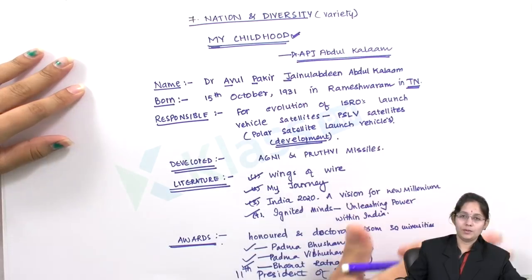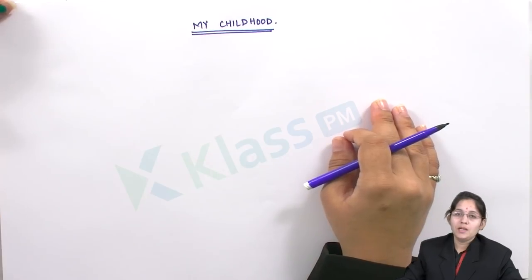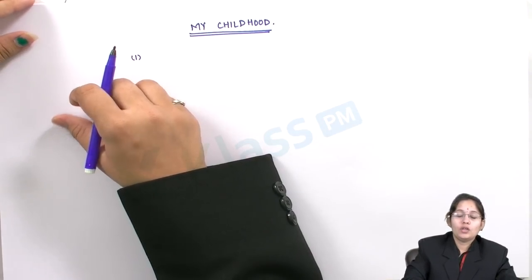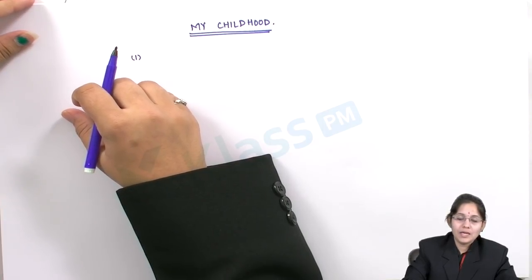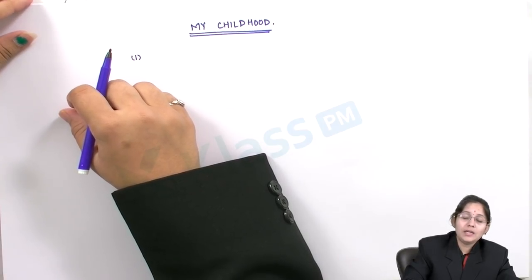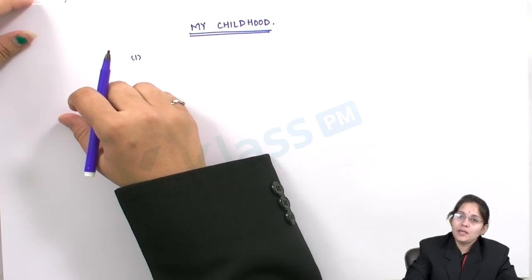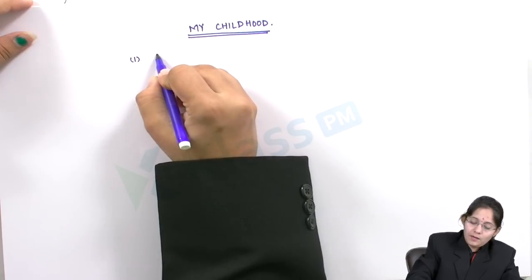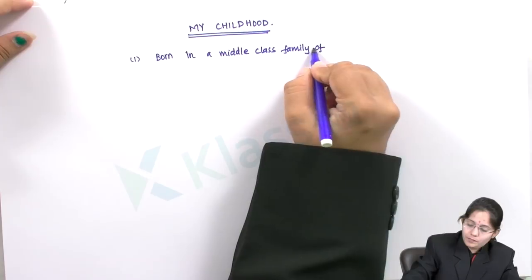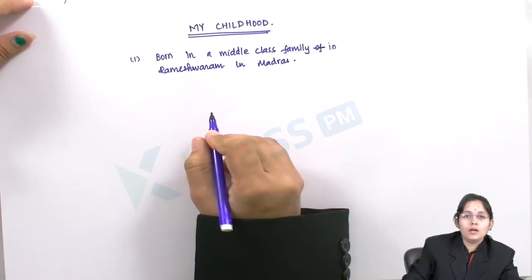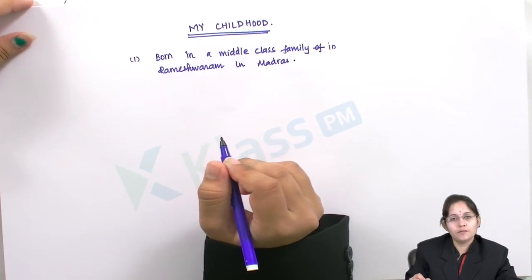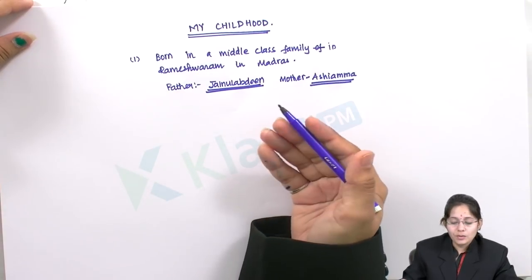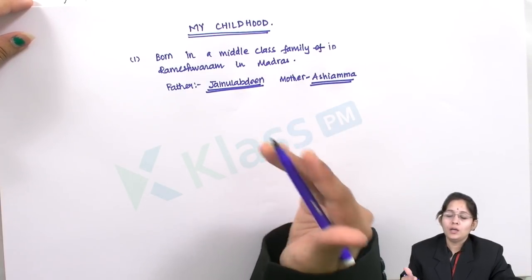Now let us begin with the lesson, titled 'My Childhood.' The lesson begins where the author, Dr. A.P.J. Abdul Kalam, introduces his parents and himself. The opening line is: 'I was born in a middle class family in the town of Rameshwaram' — the island town in the erstwhile Madras, present day Tamil Nadu. His father's name was Jainulabdin and his mother's name was Ashyamma.